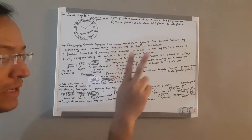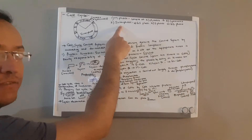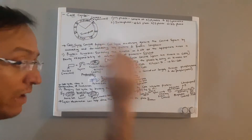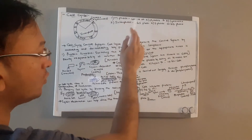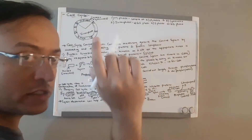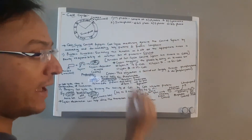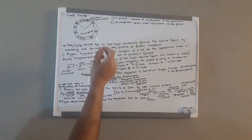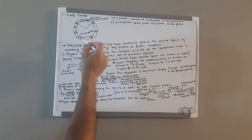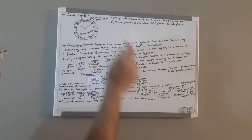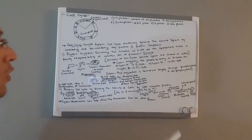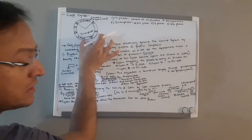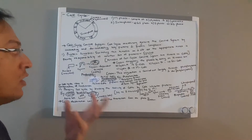The cell cycle basically has two phases: M phase and interphase. The M phase consists of mitosis and cytokinesis. The interphase has G1 phase, S phase, and G2 phase. So it goes G1 phase, then S phase, G2 phase, and then the M phase with mitosis and cytokinesis. That is the basic cell cycle.